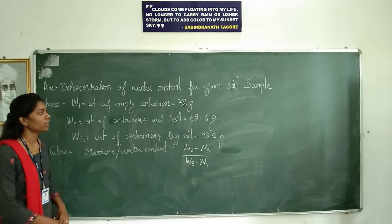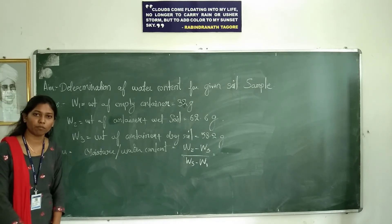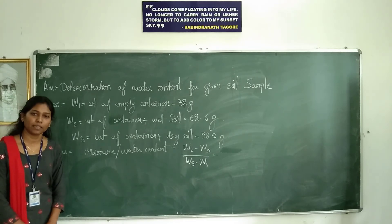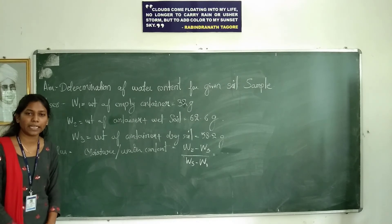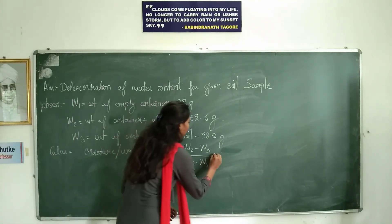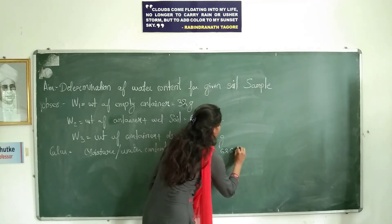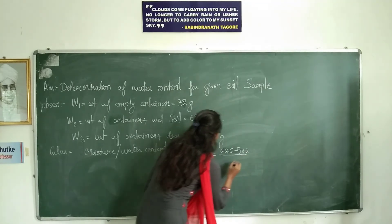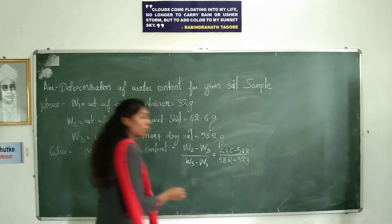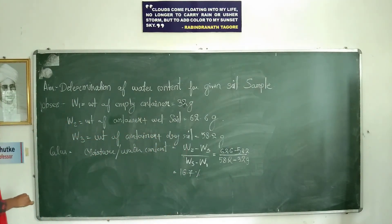W1, which is weight of empty container, is 32 grams. W2, which is weight of container plus wet soil, is 62.6 grams. W3, which is weight of container plus dry soil, is 58.2 grams. The formula for moisture content is: (W2 minus W3) divided by (W3 minus W1). Substituting values: (62.6 minus 58.2) divided by (58.2 minus 32), we get the moisture content as 16.7%.